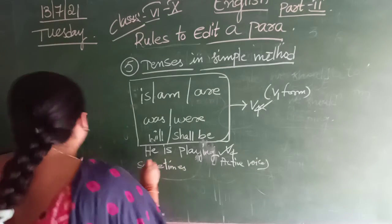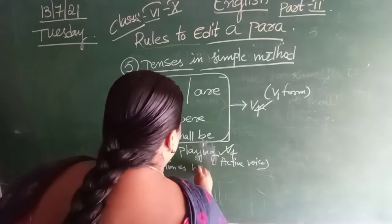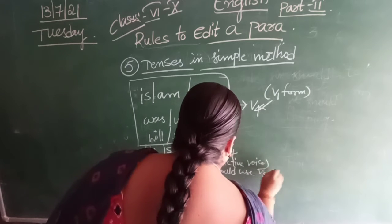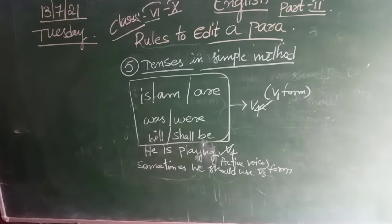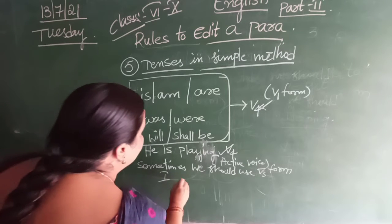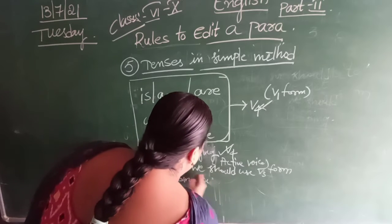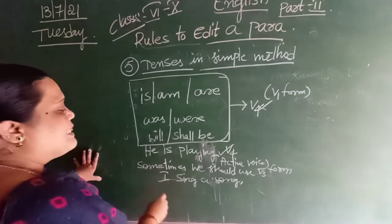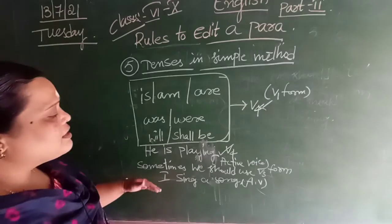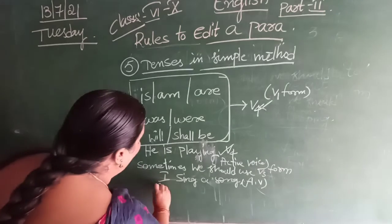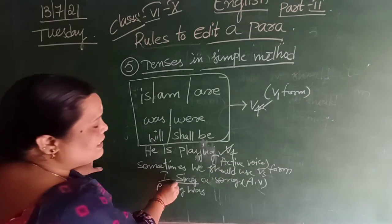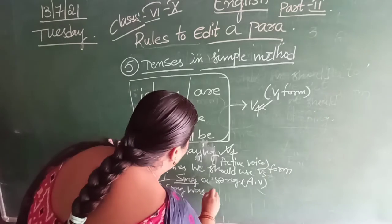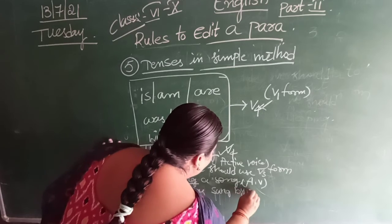Sometimes we should use V3 form. For example, 'I sing a song' — this sentence is in active voice. Now we are going to change it. 'A song was sung' — 'sing' changes to 'sung,' which is V3. 'Sing' is in present tense, V1 form, and this changes to V3. So 'A song was sung by me.' When we are changing the voice, we use V3 forms.